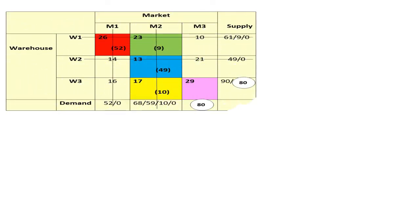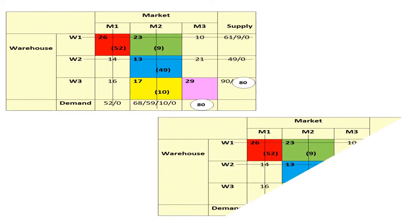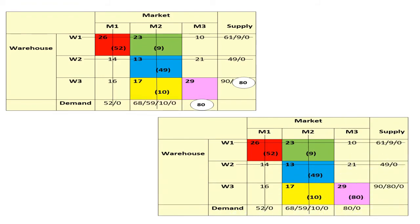The next Northwest Corner is cell W3,M3, shown in purple. Supply is 80 units and demand is also 80 units. We allocate 80 units to this cell. Both supply and demand become 0. As all supply and demand values are now 0, the problem stops here.